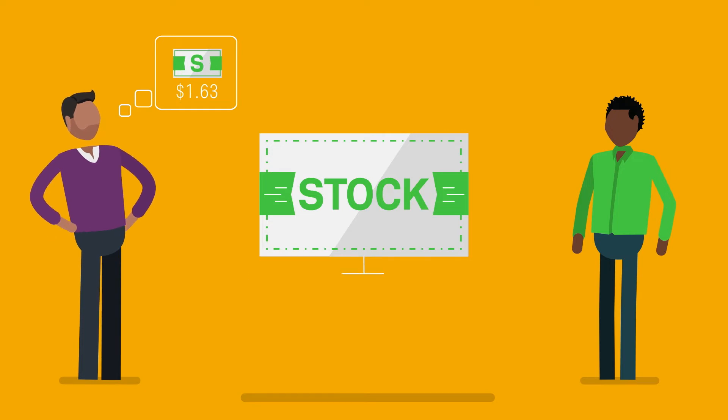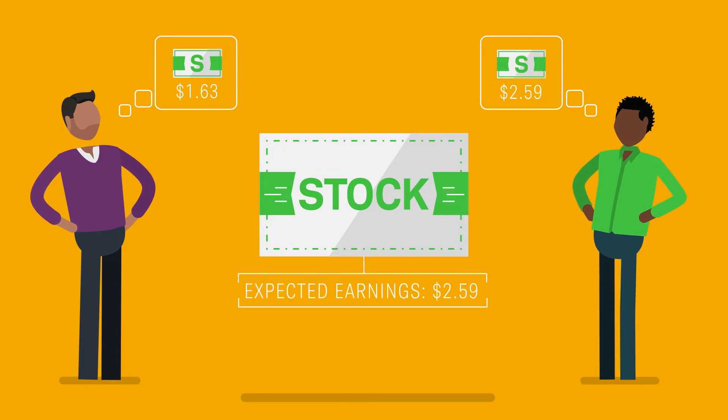But suppose another investor expects earnings for the same stock to grow at a more accelerated 10% per year because he thinks a new product might sell better than expected. Well, in 10 years, the expected earnings would be $2.59 per share.